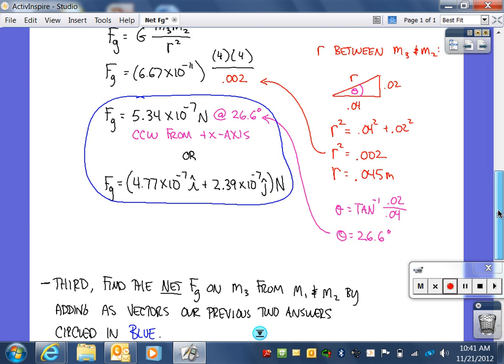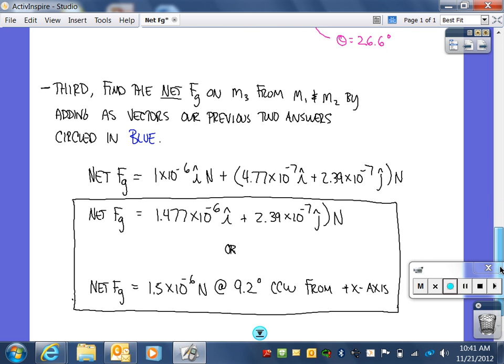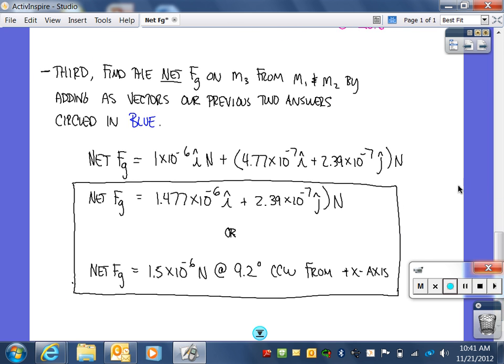Finally, we will find the net gravitational force on M3 from M1 and M2 by adding our previous two answers, which are circled in blue. This is easiest to do when the forces are in unit vector notation. This answer here, 1 times 10 to the negative 6 i newtons, was our first answer, which is how hard M3 is being pulled on by M1.